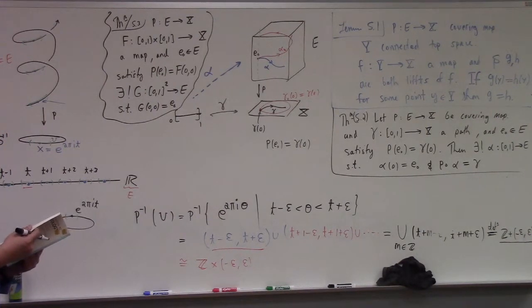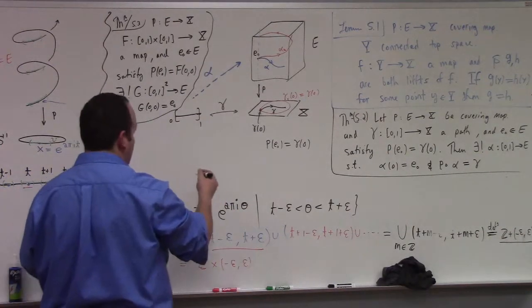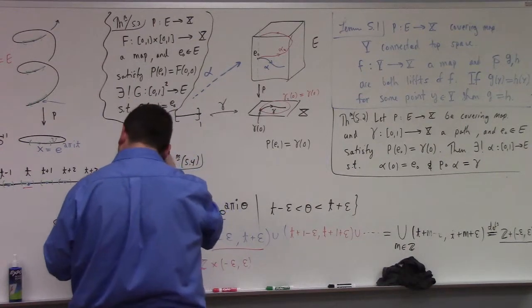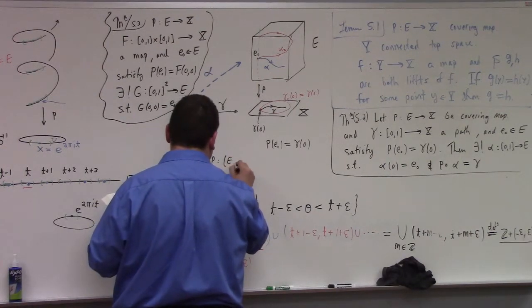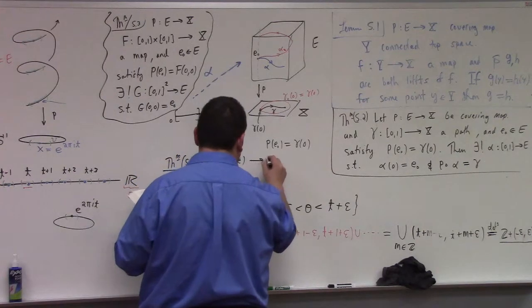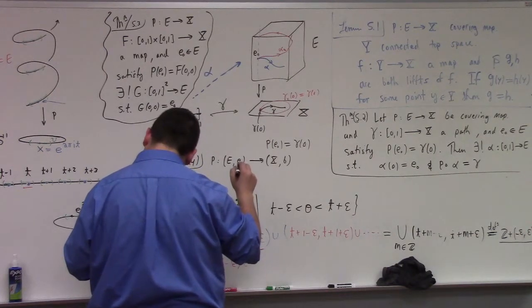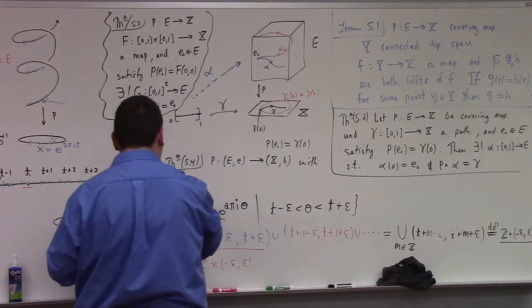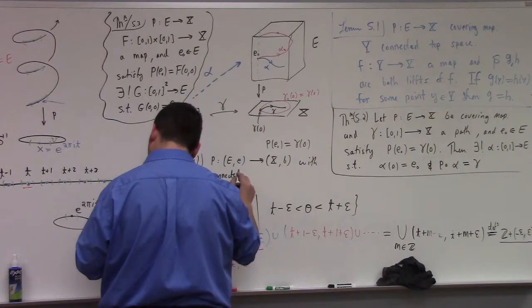So what then he does is he argues that this allows us - and we're just about out of time so I'll just get to the point here. The theorem is basically this, 5.4: if we have p a mapping from a pointed space (E,e) to (X,b) with e is simply connected, then...